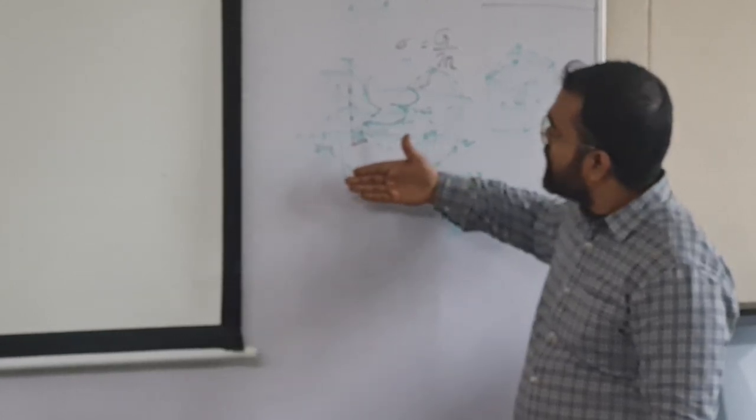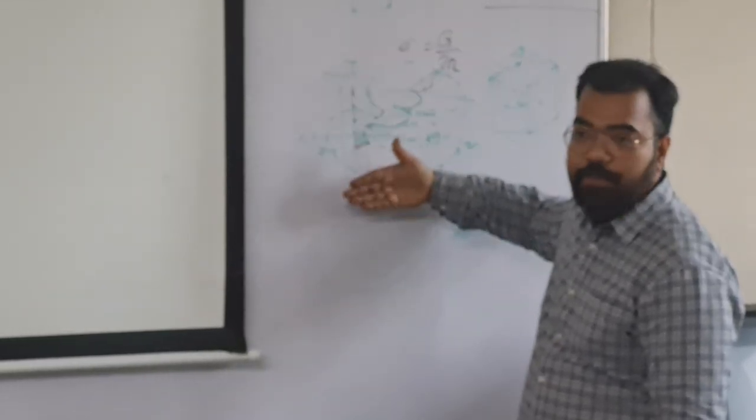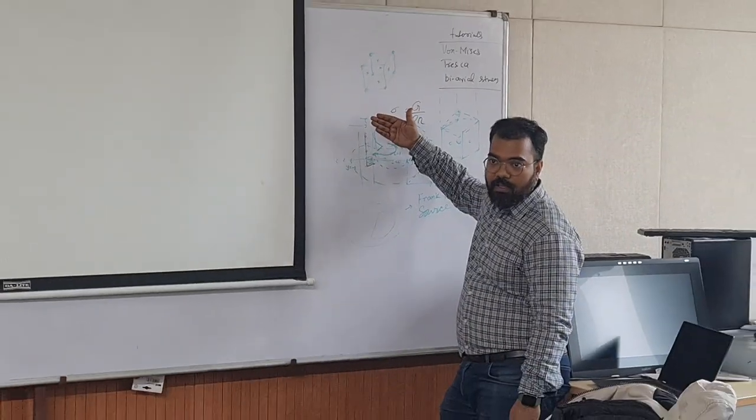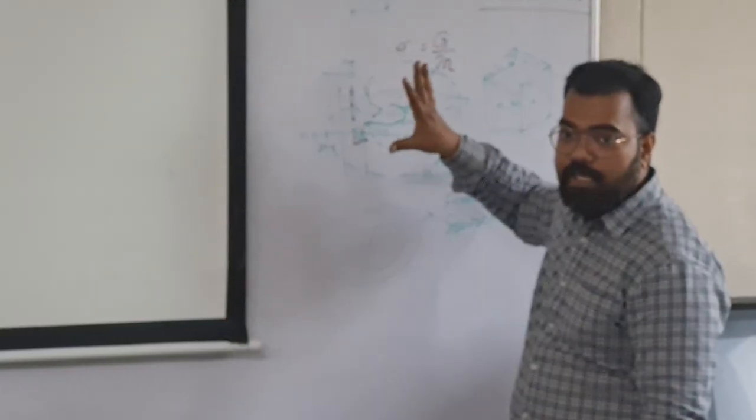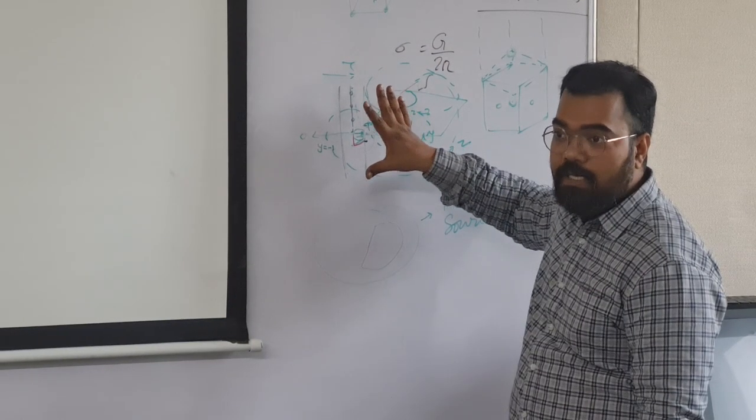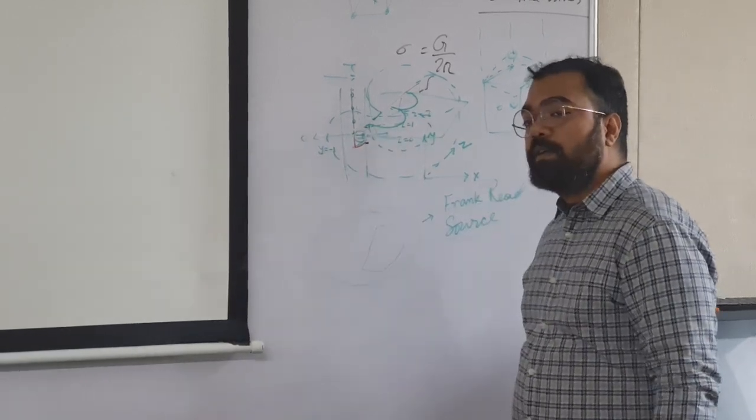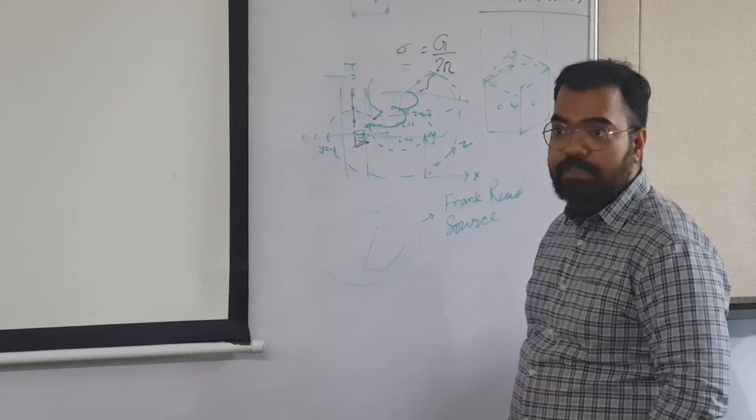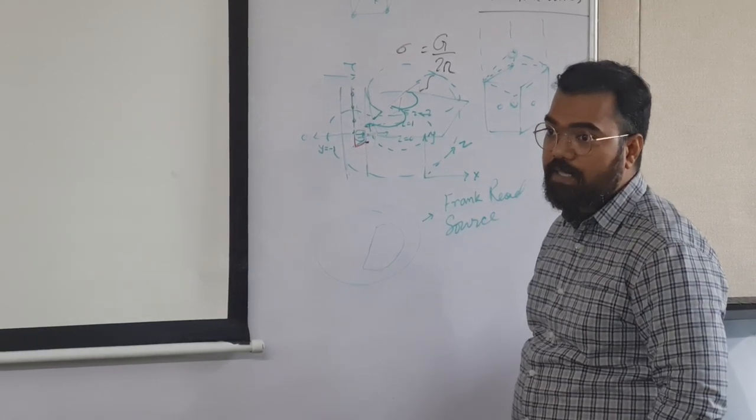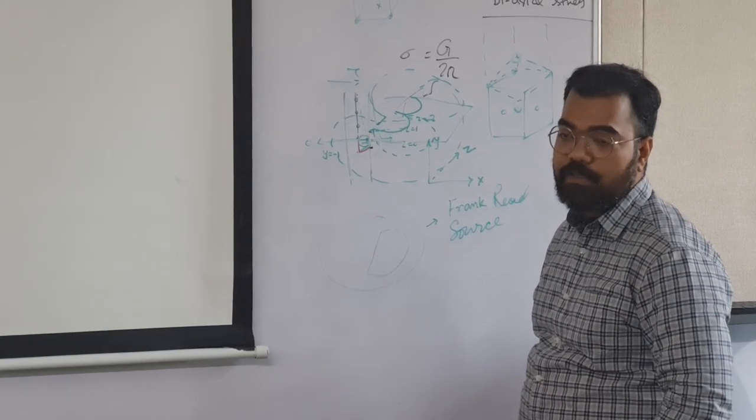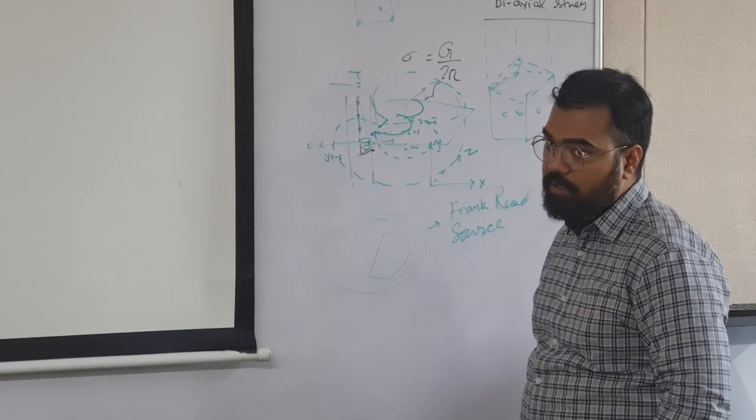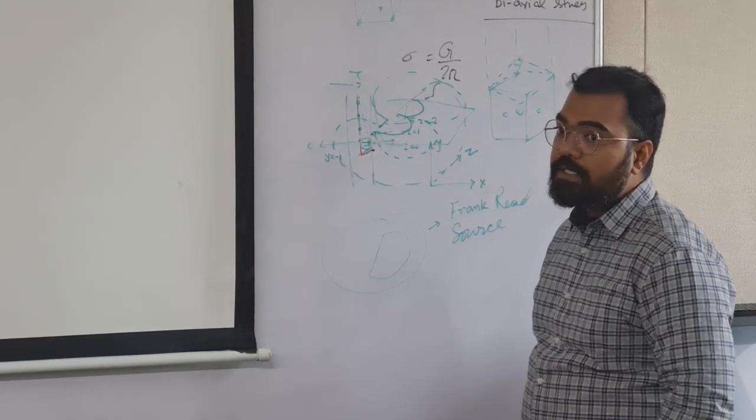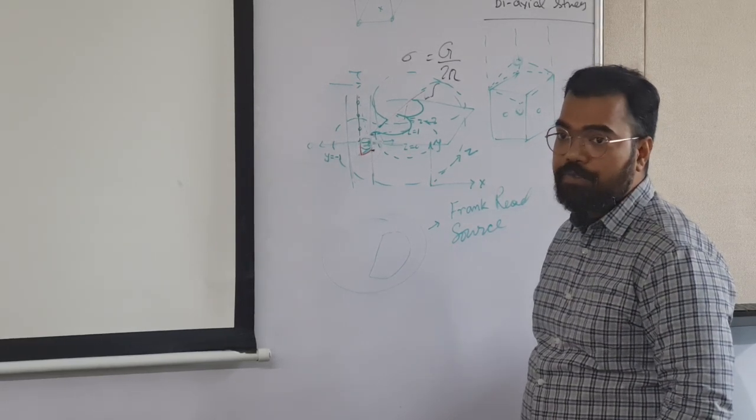In this plane, but before we try to understand that, we have to understand another type of dislocation movement. This dislocation movement is slipping, this is called slipping glide of dislocation for both screw and edge dislocation.